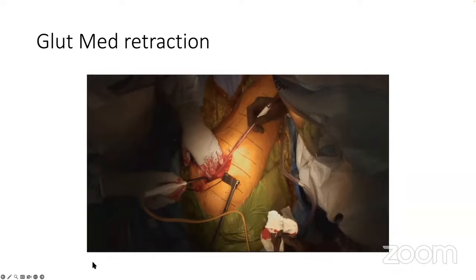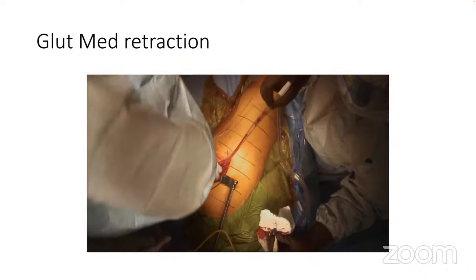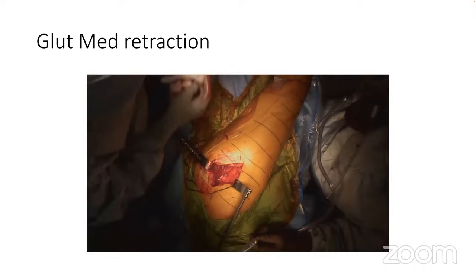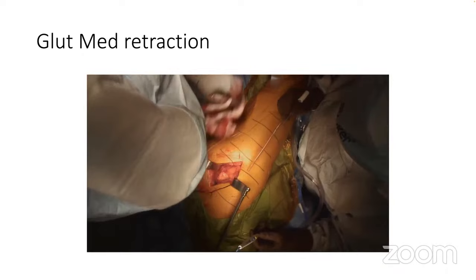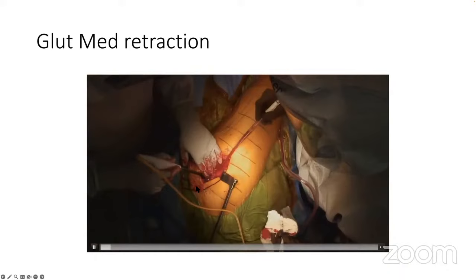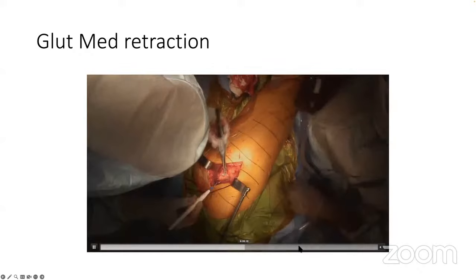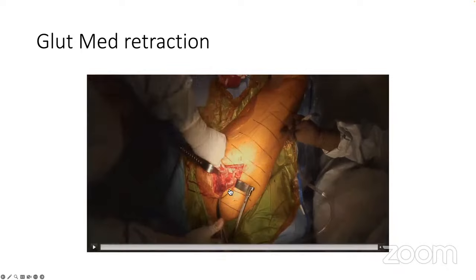The next step is to place the retractor under the gluteus medius — a simple step that helps quite a bit with exposure of the rotators. I use a lap or gauze to push the fat pad out, which allows the rotators to be exposed well. You can see the margin of the gluteus medius, and then it's simple to insert the retractor right under it. This elevates the medius and exposes the rotators and gluteus minimus.